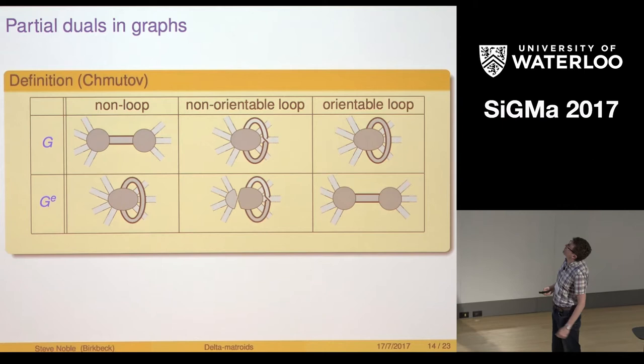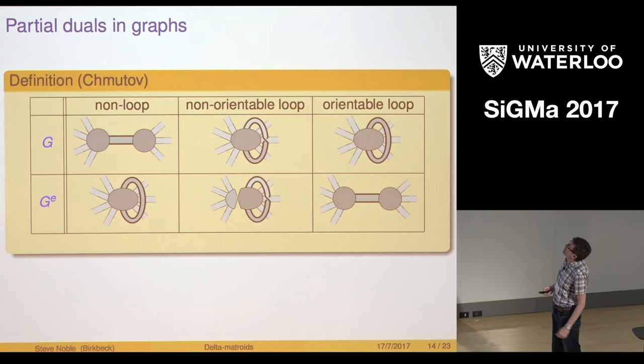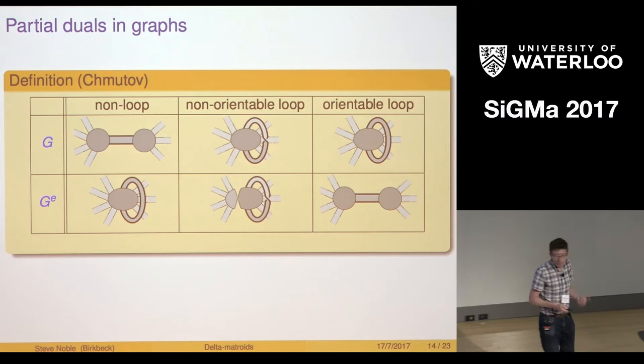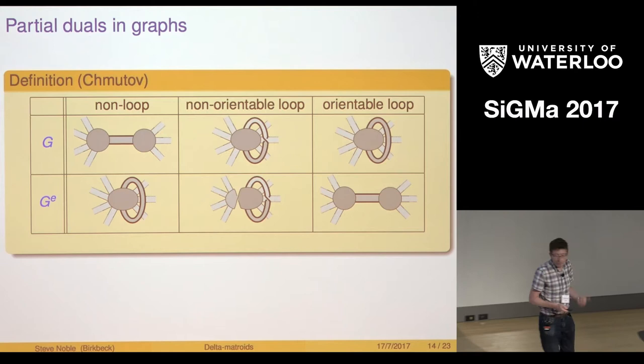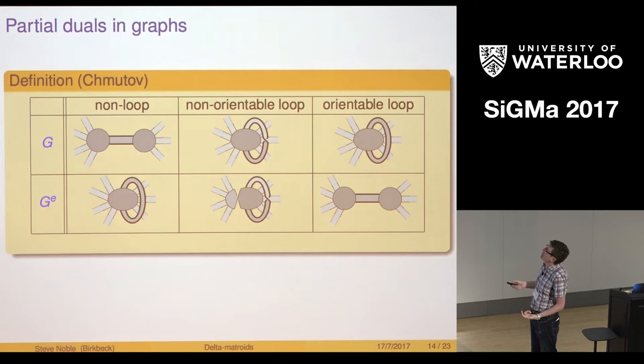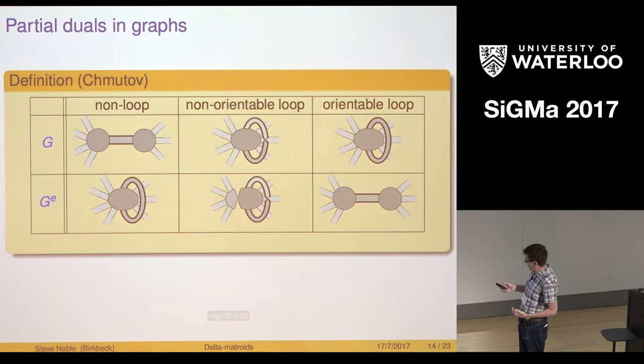Second operation on graphs: partial duality. I'm not going to say much about this other than this is generalizing duality, normal duality of embedded graphs. This is saying I can form duals by taking the dual with respect to an edge or a subset of the edges one by one. For example this edge here is replaced by an orientable loop.